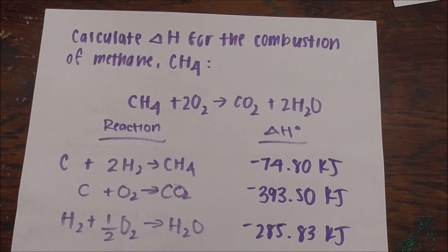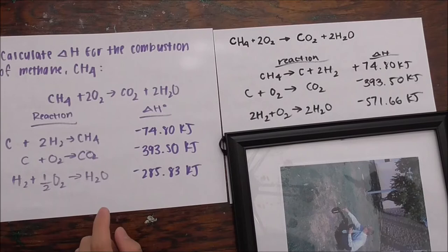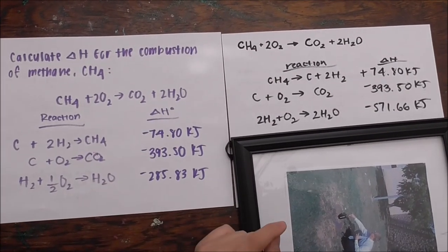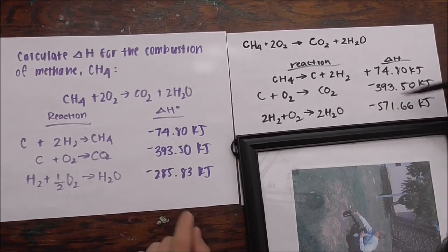Calculate delta H for the combustion of methane, CH4. In the third equation, we have one H2O. While in the master equation, we have two. Therefore, we have to multiply the whole equation by two, including the delta H.